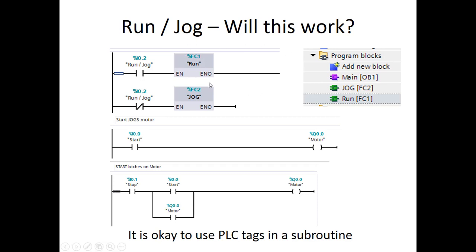Let's take a look at the first run-jog example — will this work? What we have here is that toggle switch. We're either going to be in run or jog because we're using it as a single input. So it's scheduled so that either this function is going to run or this function is going to run — both of them are not going to run at the same time. That's one way to schedule it.